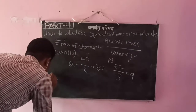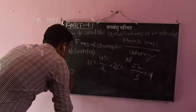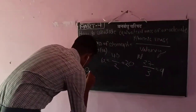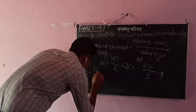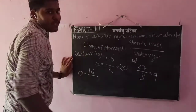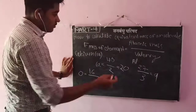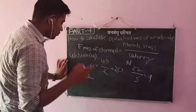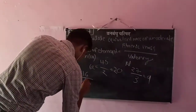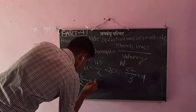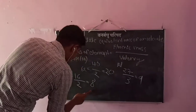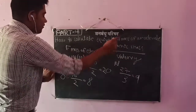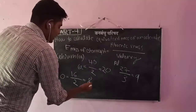Then oxygen. Oxygen's atomic mass is 16, divided by valency 2. So the Equivalent Mass of oxygen is 8.